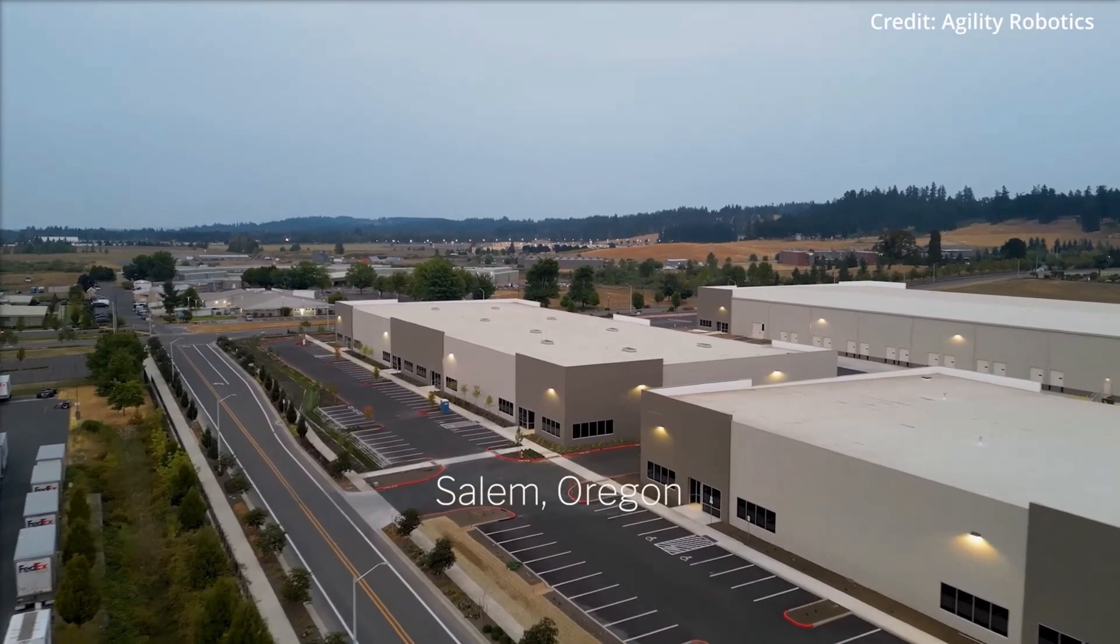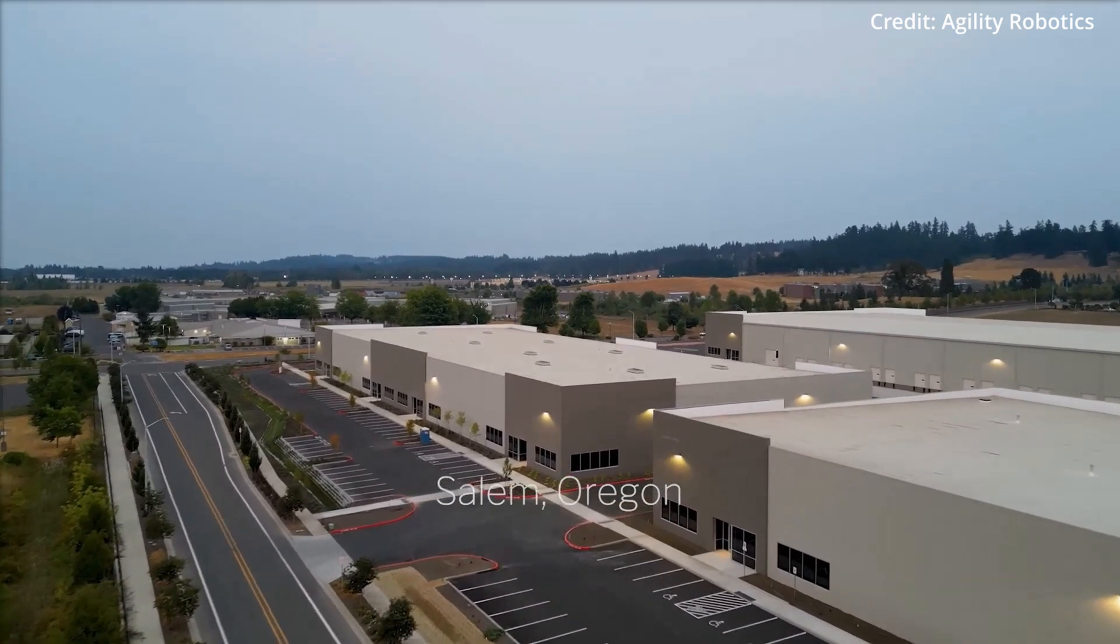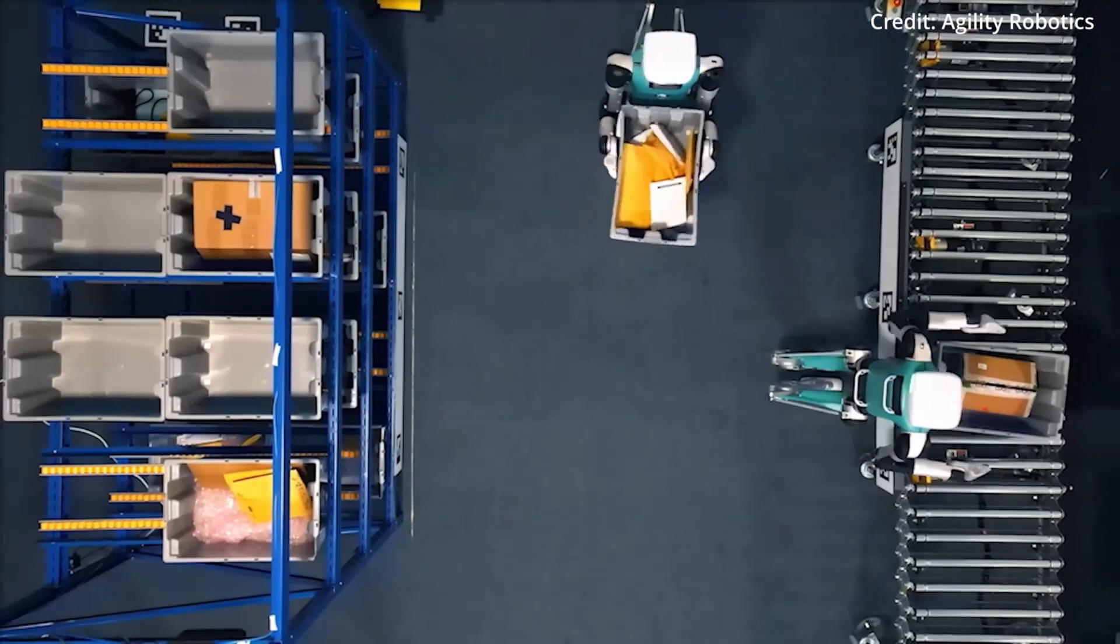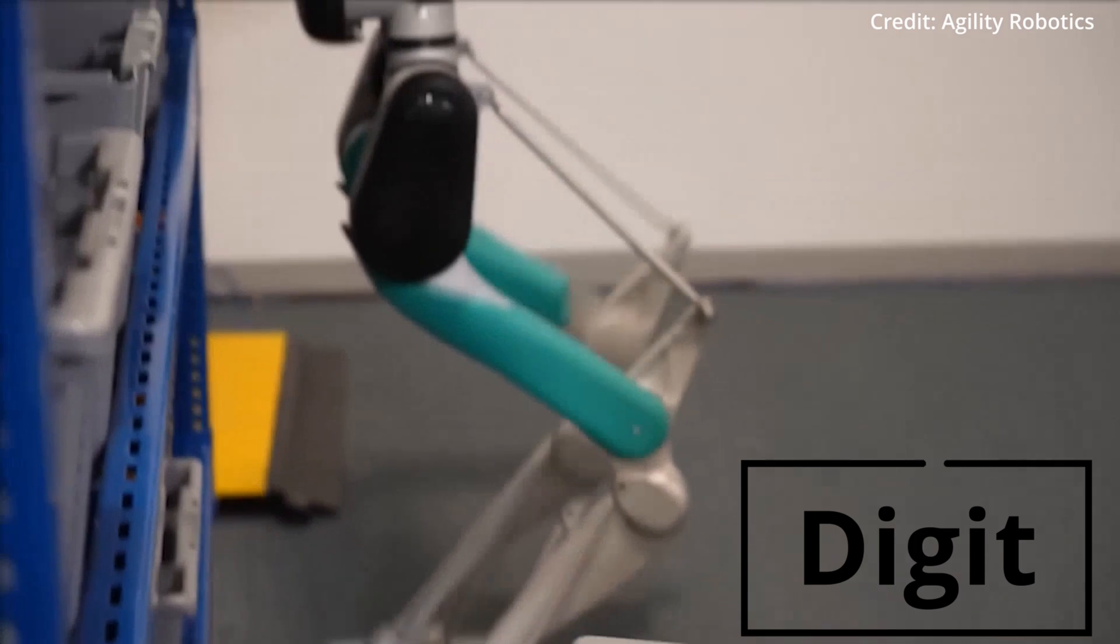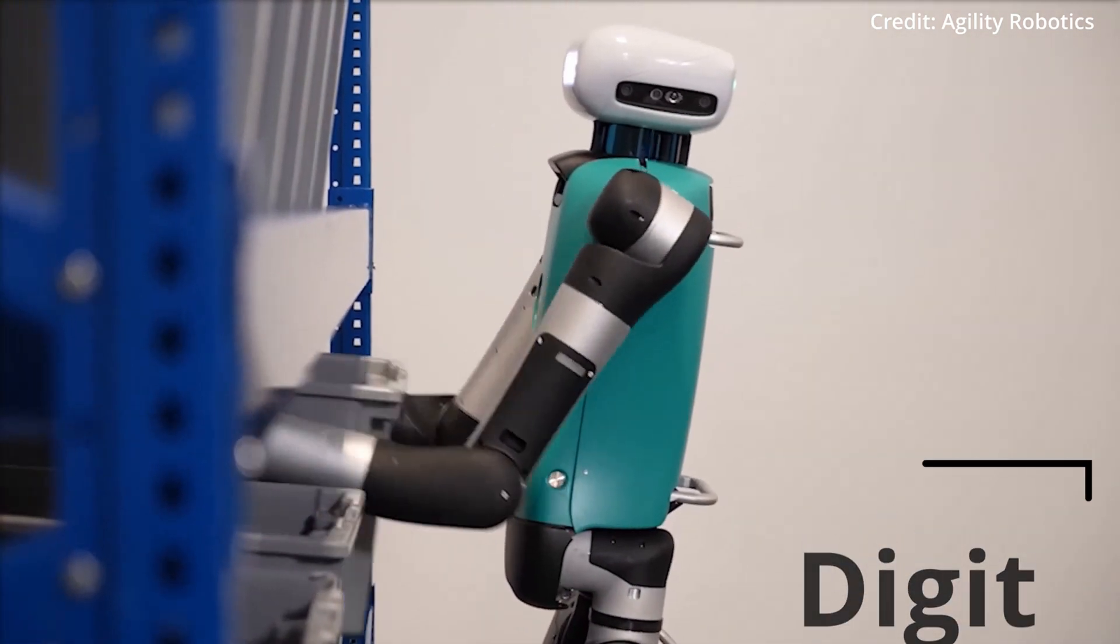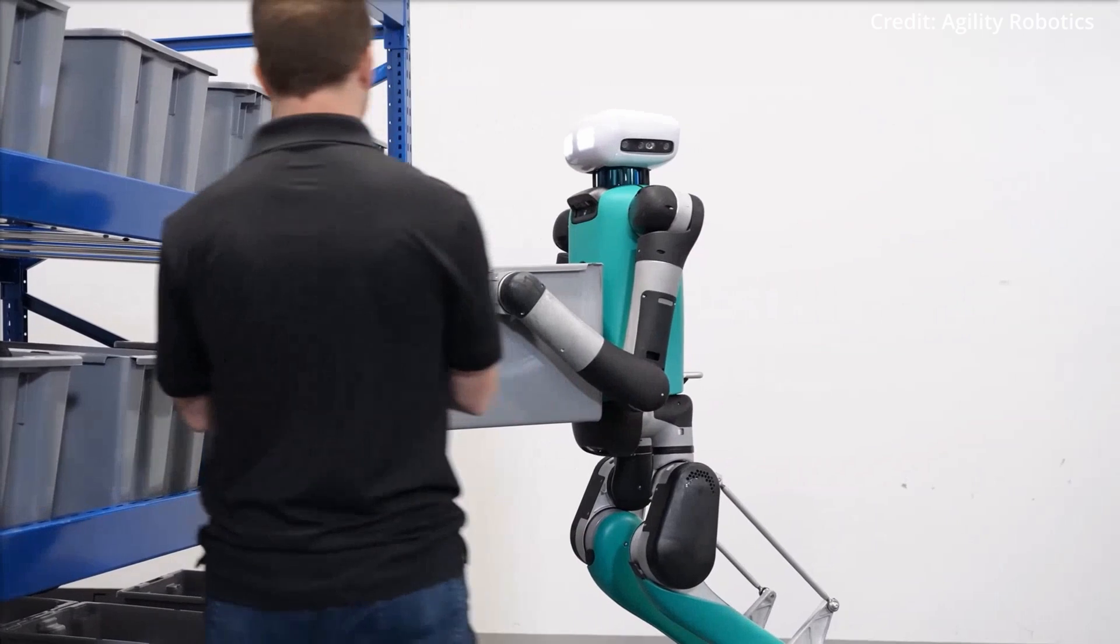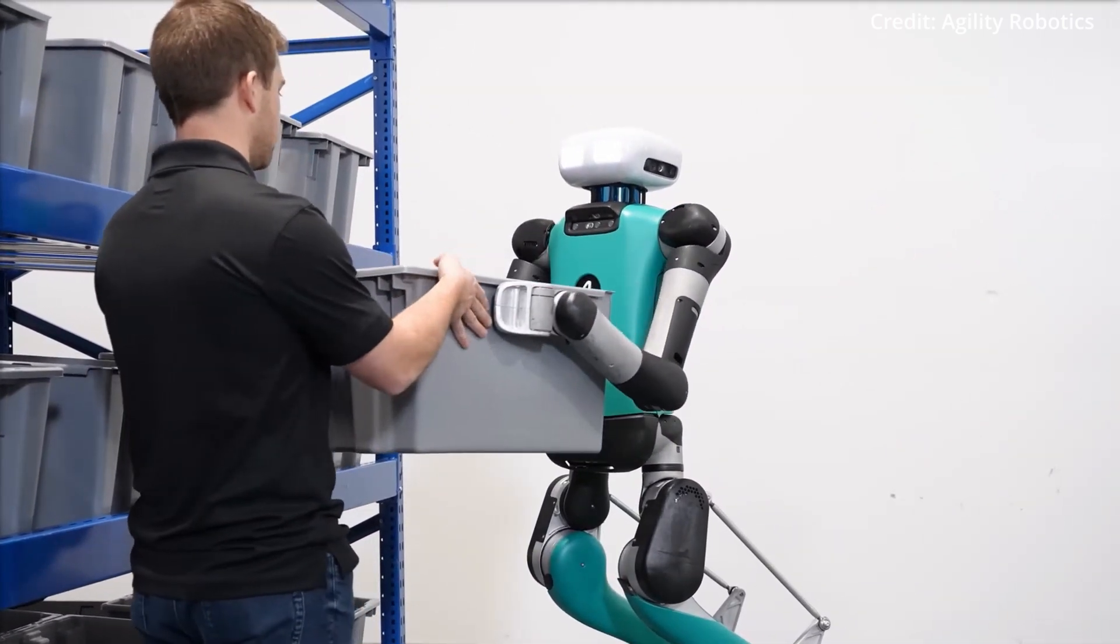This 70,000 square foot facility in Oregon will mass produce a pioneering line of humanoid robots named Digit, which are designed with two legs and two arms to freely maneuver as a collaborative device and work with humans in diverse environments, but the robot's artificial intelligence abilities are what really shine.